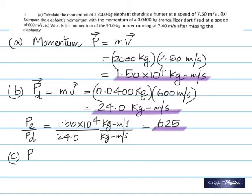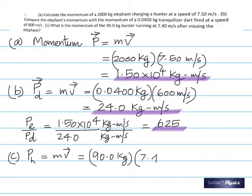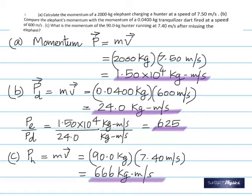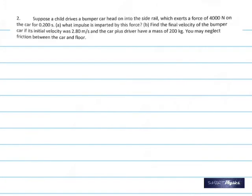Part C: the momentum of the hunter. Multiply the mass of the hunter with his velocity — that's all you have to do. The answer is 666. Not a good number.